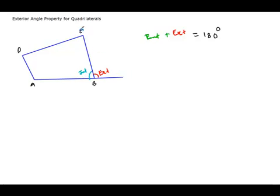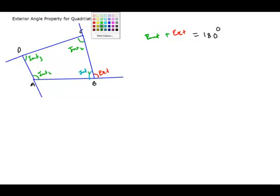Now similarly you can extend the other lines and draw the exterior angles like this. So if we label them: this is interior one, this will be interior two, this is interior three, and this is interior four. Then correspondingly, this angle is exterior one, this angle is exterior two, this is exterior three, and this here is exterior four.